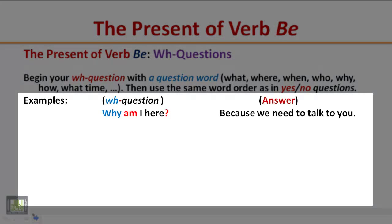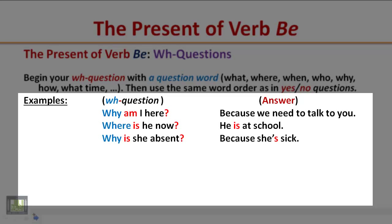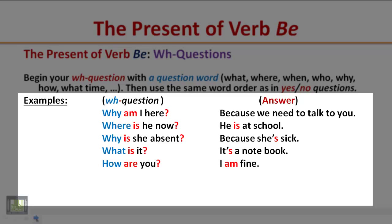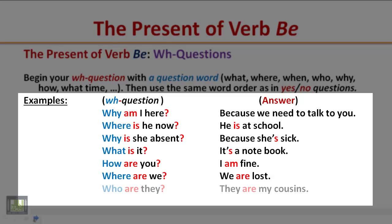Examples: Why am I here? Because we need to talk to you. Where is he now? He is at school. Why is she absent? Because she is sick. What is it? It's a notebook. How are you? I am fine. Where are we? We are lost. Who are they? They are my cousins. Pay attention: begin your WH question with a question word, then use verb be followed by the subject, the same word order as in yes/no questions.